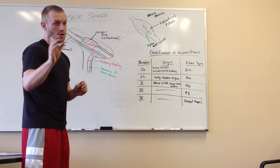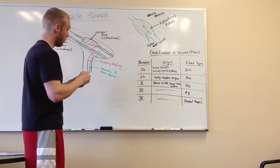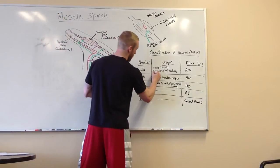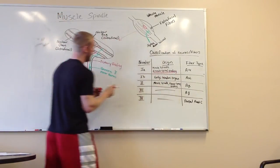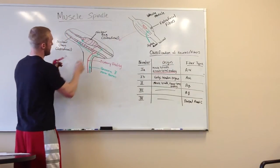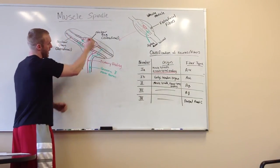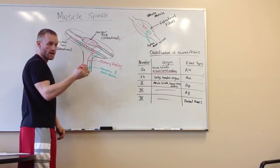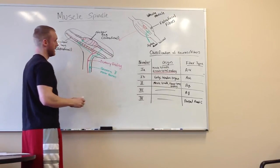Our primary endings, now you're going to remember what I'm talking about. Our primary endings are going to give us our annulospiral ending. And you can see that they spiral around each fiber. That's what the annulospiral ending is.